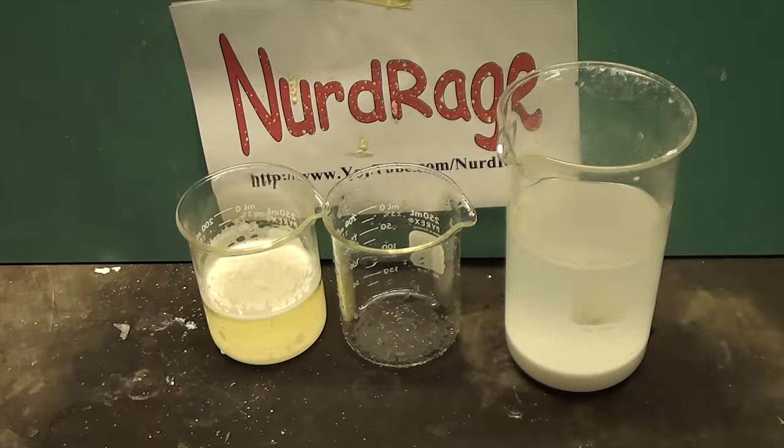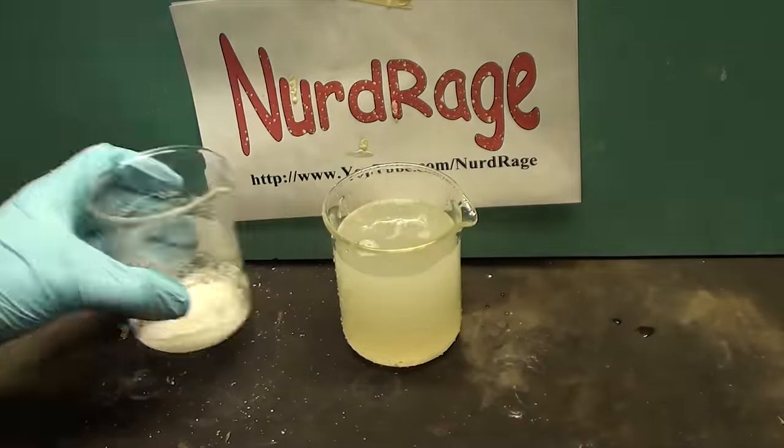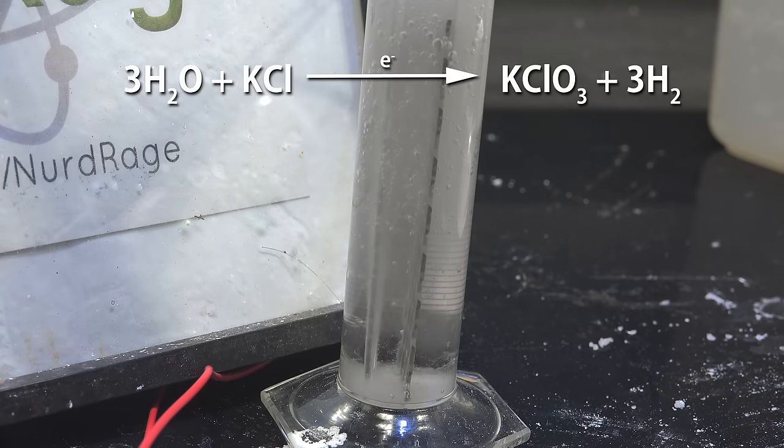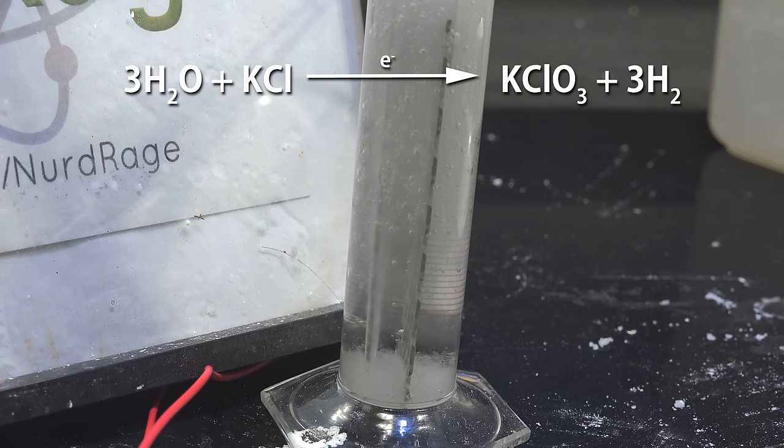You need large quantities of bleach to get small amounts of potassium chlorate. In this video we're going to make potassium chlorate by electrolysis. The idea is to apply electric current directly to a solution of potassium chloride. This converts it to potassium chlorate.